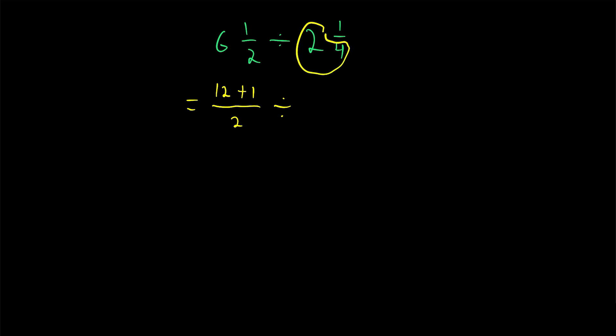Again, remember the process. We multiply the whole part by the denominator of the fraction—that's 8. Then we add the numerator of the fraction, so plus 1, and divide that sum by the denominator, which is 4.